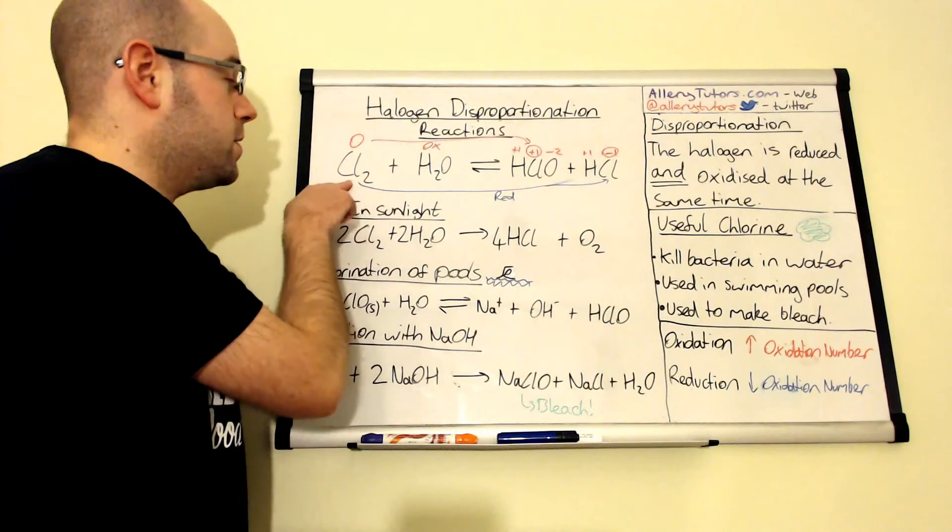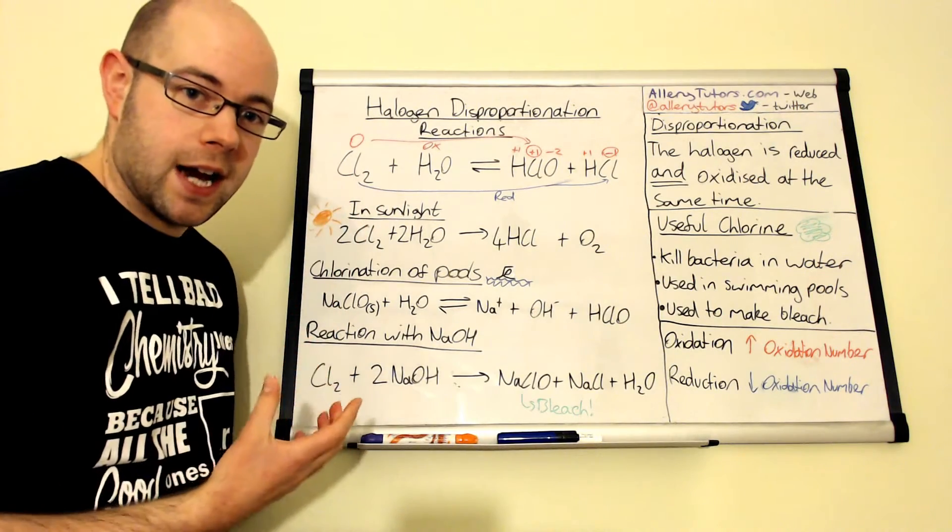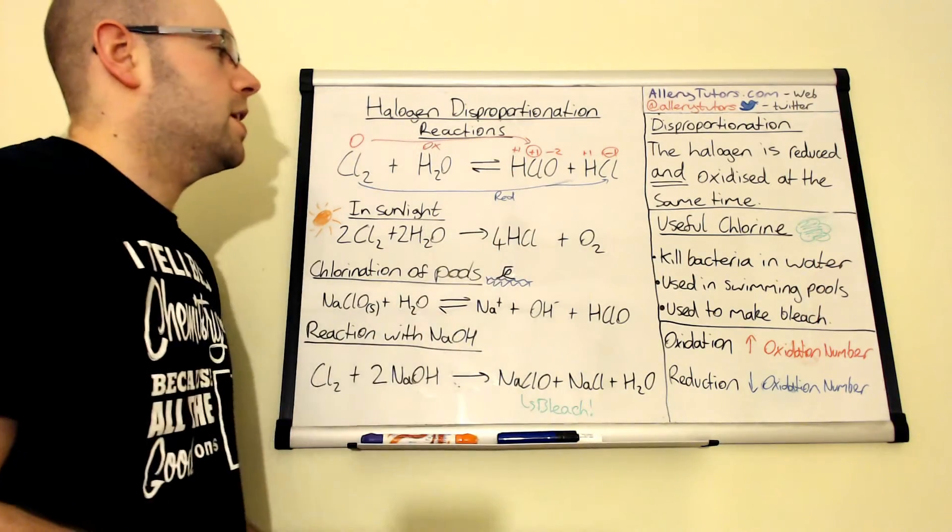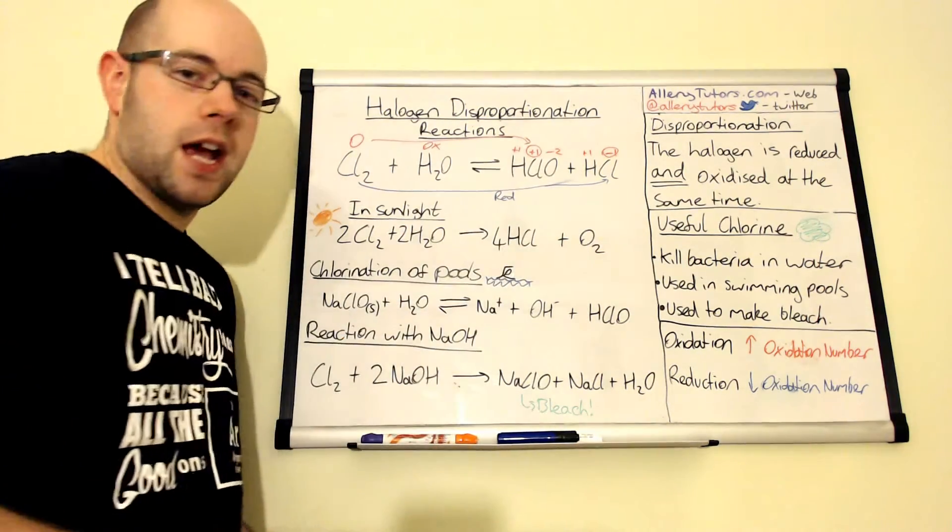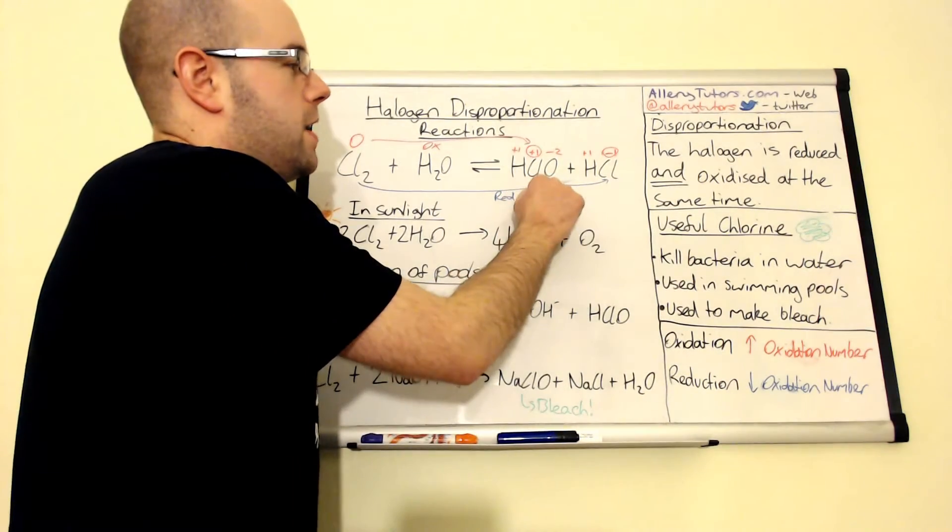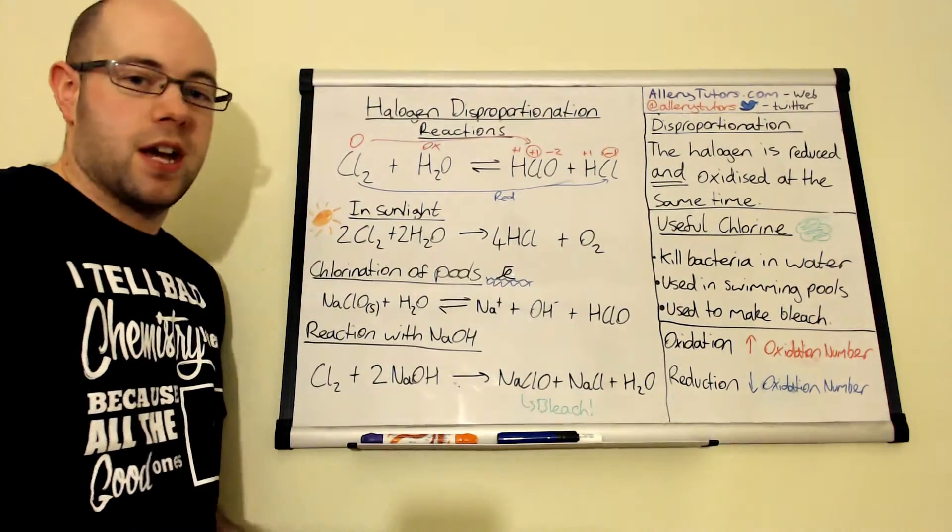So one of the things we can do is we can physically take chlorine gas, which is Cl2, and bubble that through water. And we form this, which is HClO or chloric acid, which is ClO here, and then it'll form HCl as well.